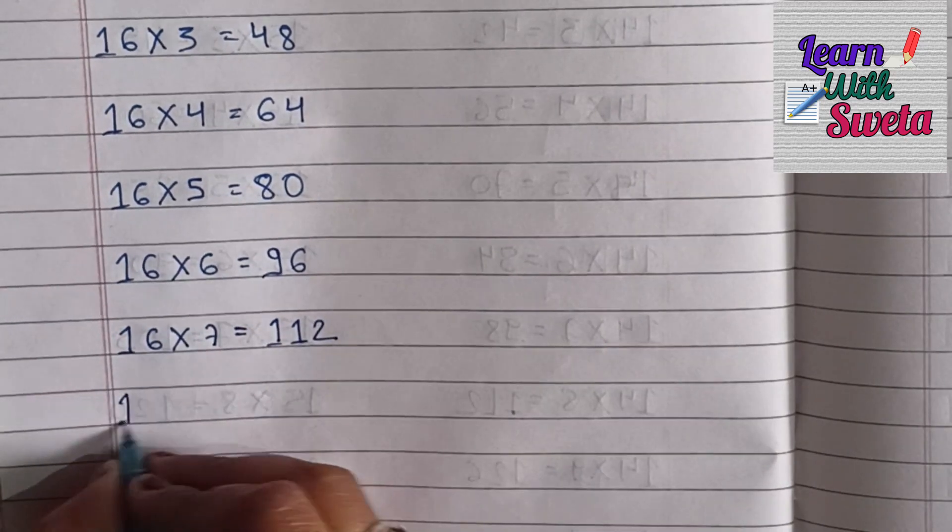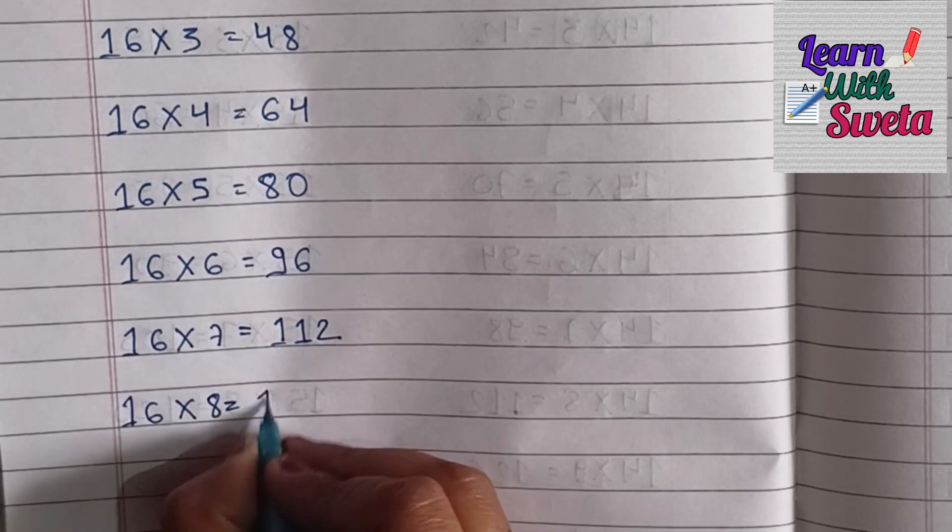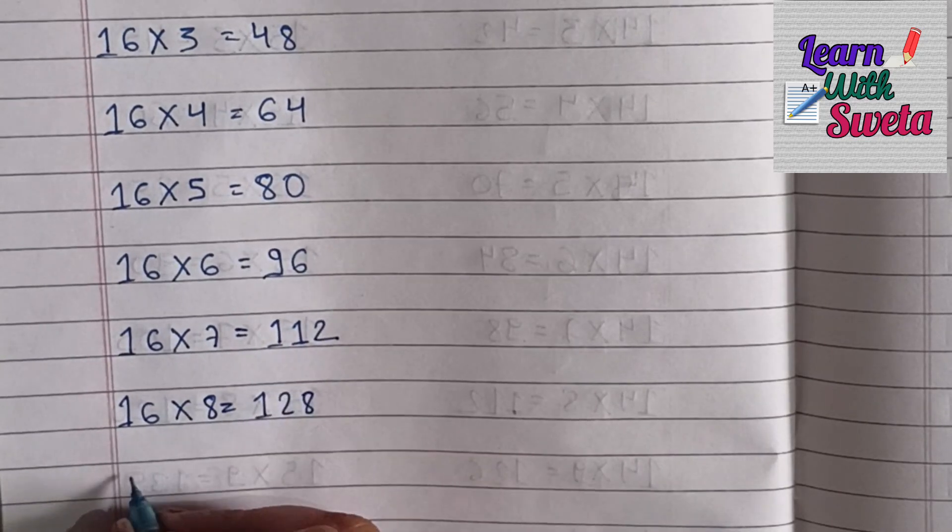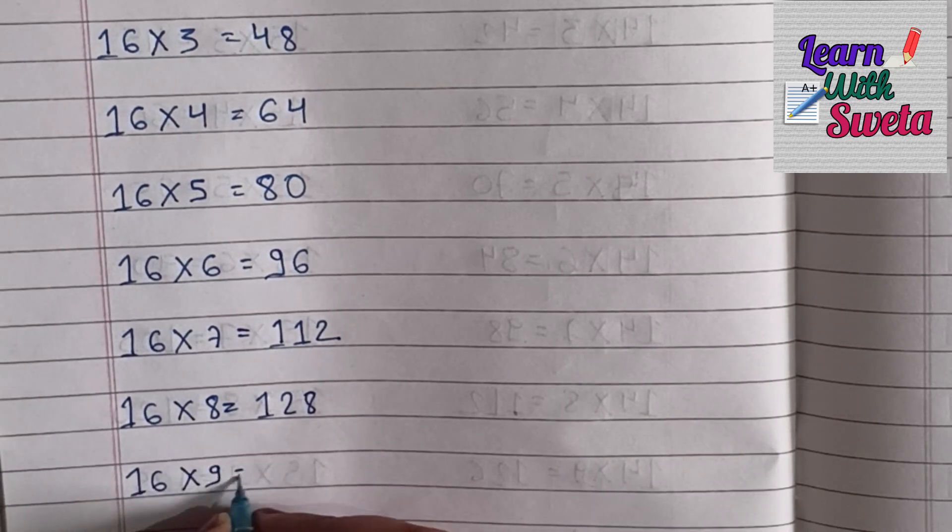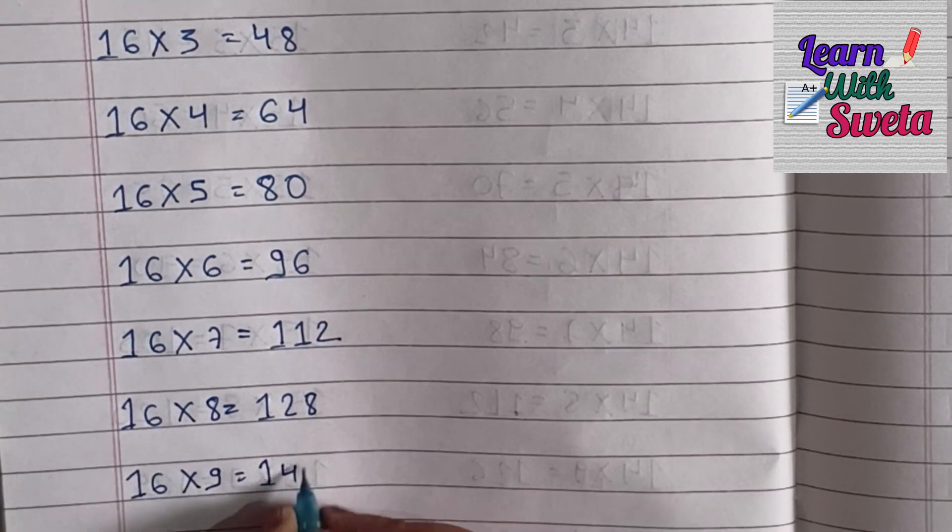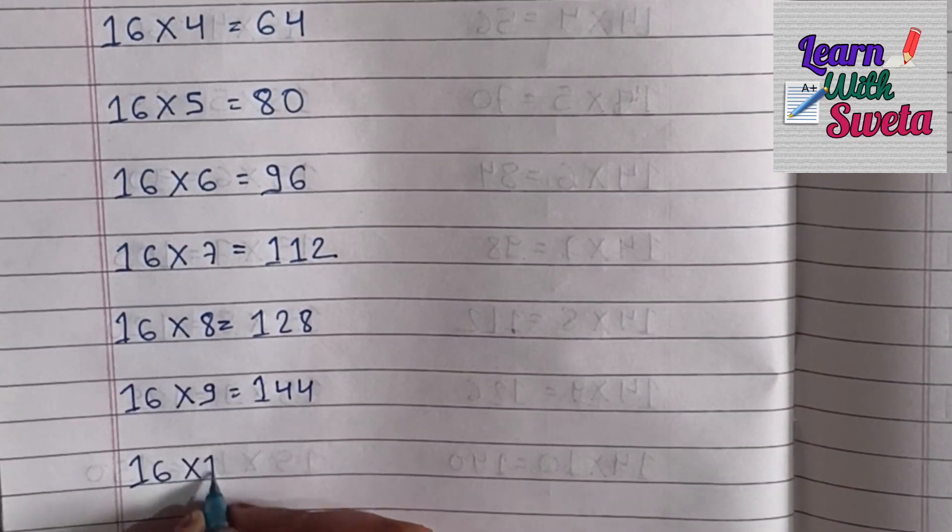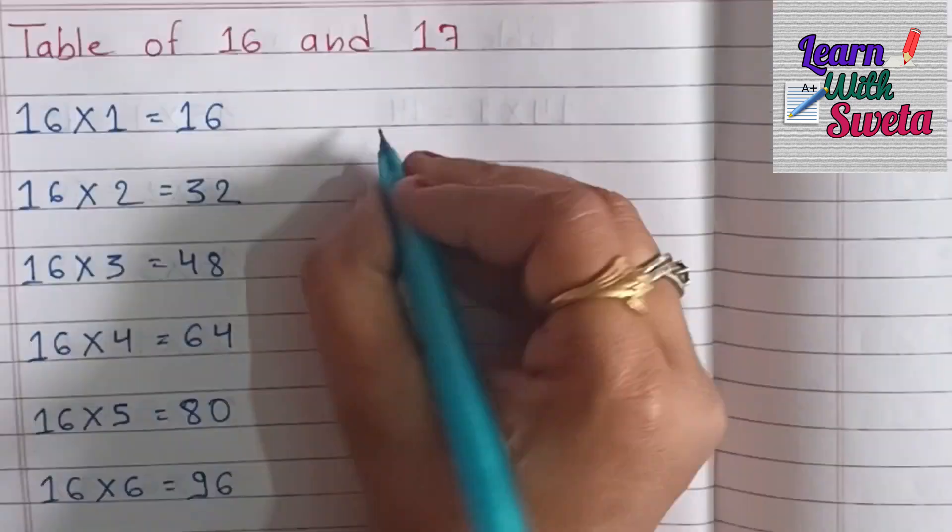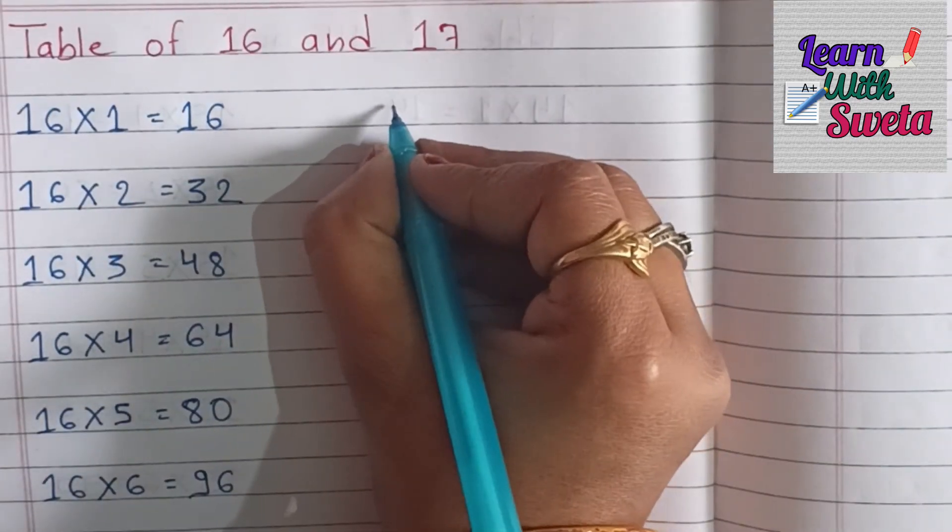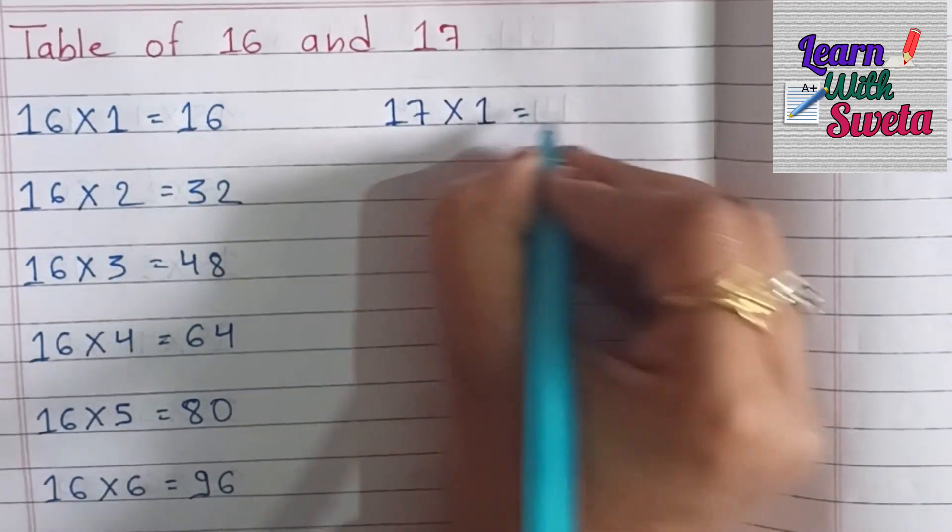16×8=128, 16×9=144, 16×10=160. Table of 17: 17×1=17